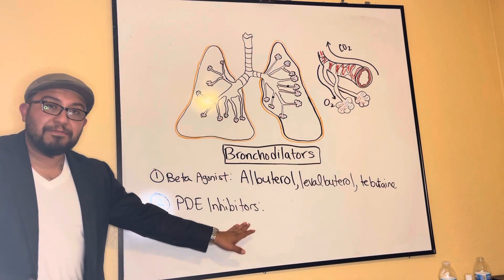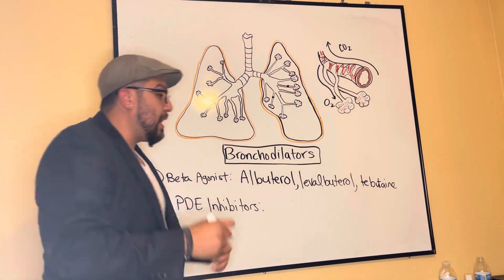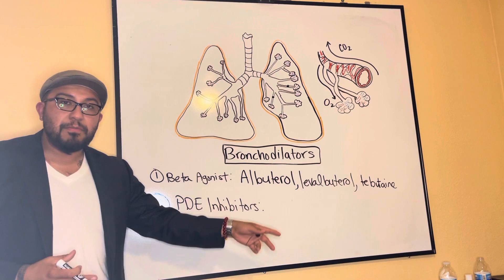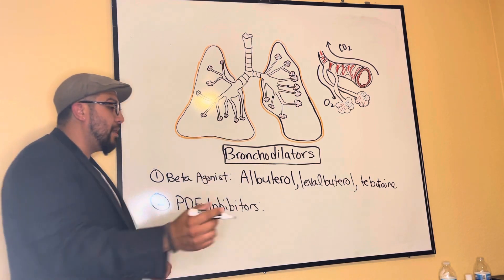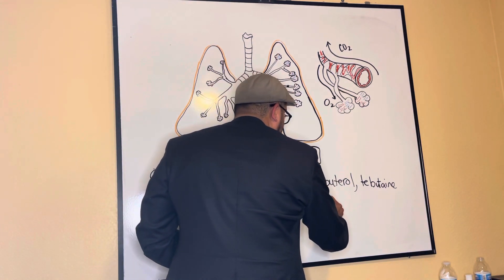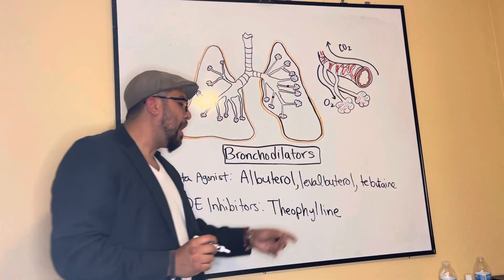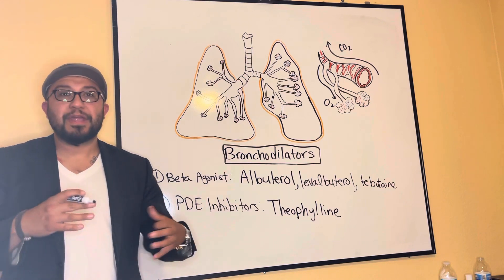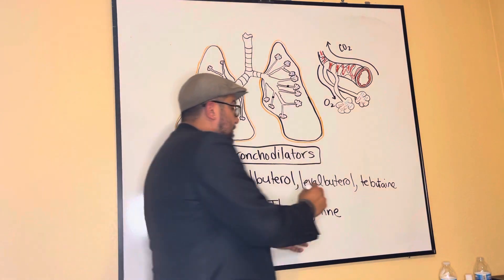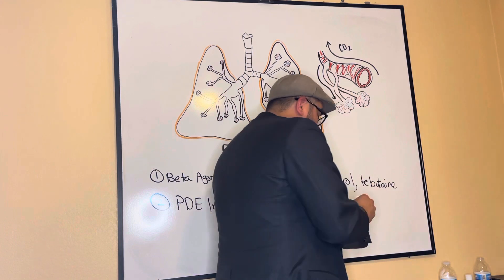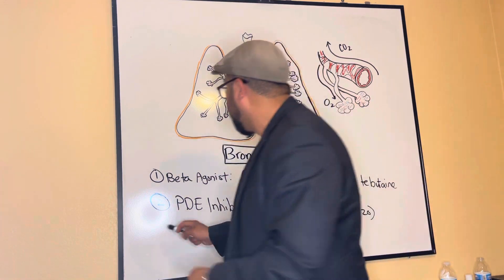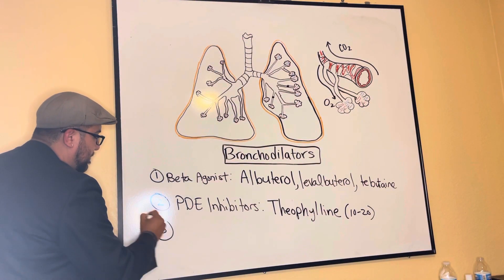When phosphodiesterase is inhibited, the smooth muscles relax and bronchodilation occurs. Both beta agonists and PDE inhibitors have different mechanisms of action but provide the same therapeutic effect of bronchodilation. The main medication in this class is theophylline, which can be given IV. We must monitor carefully because it has a therapeutic range of 10 to 20, requiring weekly lab values to ensure the patient is not developing toxicity.